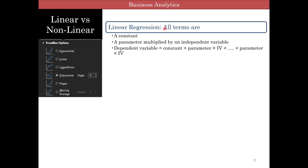In linear regression, all terms are a constant. The parameter is multiplied by an independent variable. So you have something like: dependent variable equals intercept or constant plus parameter 1 multiplied by independent variable, and so on until you finish with all the independent variables, each with its own unique parameter.